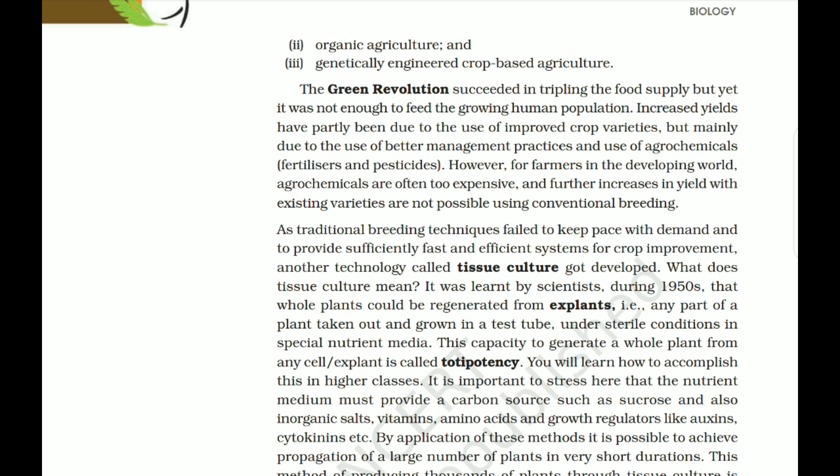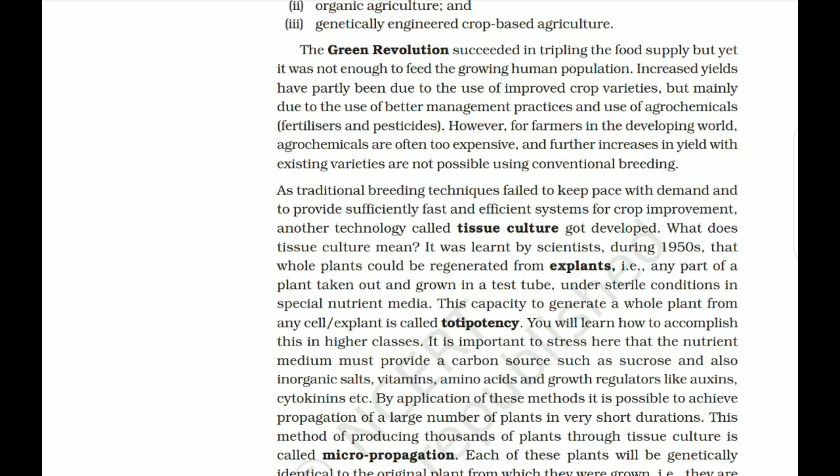As traditional breeding techniques failed to keep pace with demand, another technology called tissue culture was developed. Scientists discovered during the 1950s that a whole plant can be regenerated from explants — any part of a plant taken out and grown in a test tube under sterile conditions in special nutrient media. This capacity to generate a whole plant from any cell or explant is called totipotency. The nutrient medium must provide a carbon source such as sucrose, along with inorganic salts, vitamins, amino acids, and growth regulators like auxins and cytokinins.